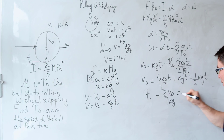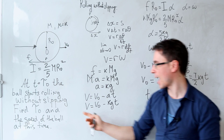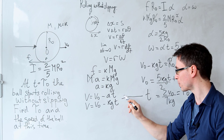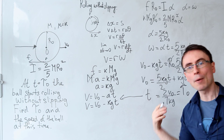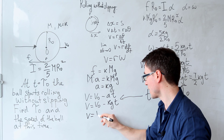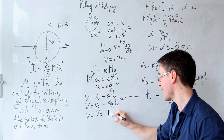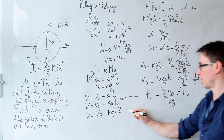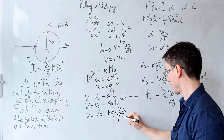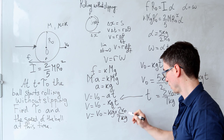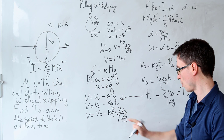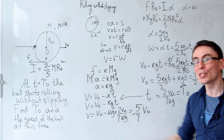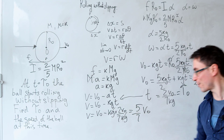The question asks for this time τ₀ = 2v₀/(7kg) and the speed at that moment. Substituting back: v = v₀ − kg·(2v₀/(7kg)) = v₀ − (2/7)v₀ = (5/7)v₀. So at the moment the ball begins rolling without slipping, its speed is exactly 5/7 of its initial speed.